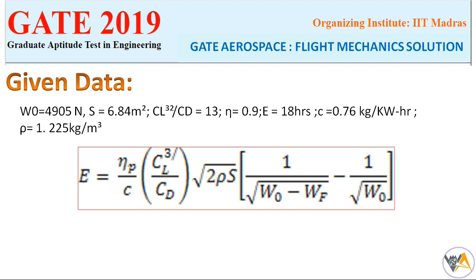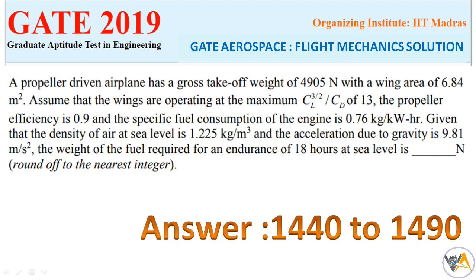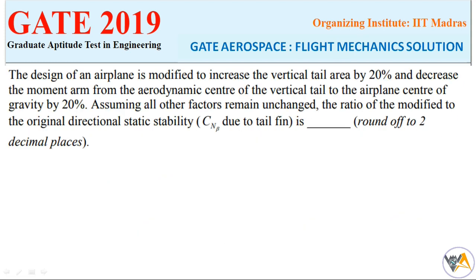Recalling the endurance formula for a propeller-driven aircraft and substituting the given data — total weight 4,905 N, S = 6.84 m², CL^(3/2)/CD = 13, η = 0.9, endurance = 18 hours, SFC = 0.76 kg/kWh, ρ = 1.225 kg/m³ — we get the weight of fuel required as approximately 1,458 Newtons, which is within the acceptable range.